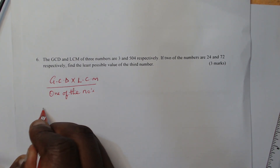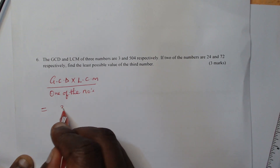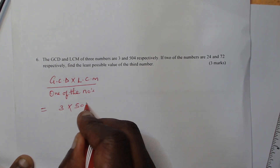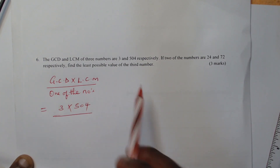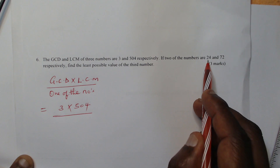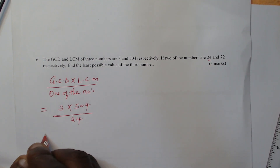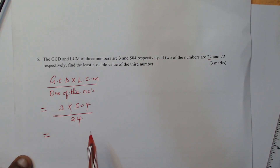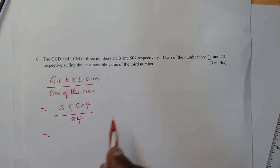In this case, GCD is 3, multiplied by the LCM which is 504, then divided by one of the numbers — 24. When you work out these, this will give you the first possible value of that number, and this will give 63.